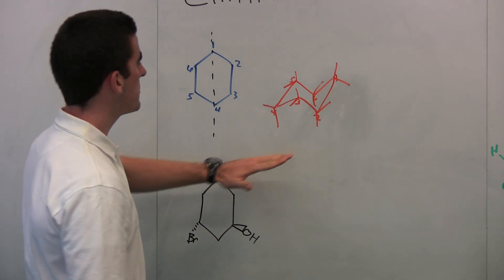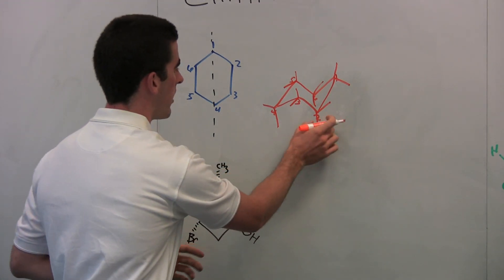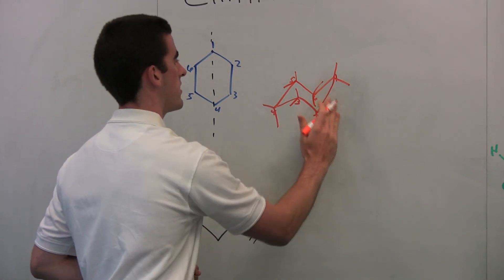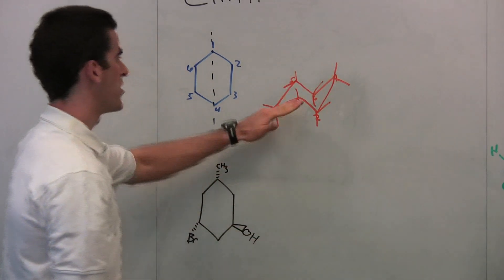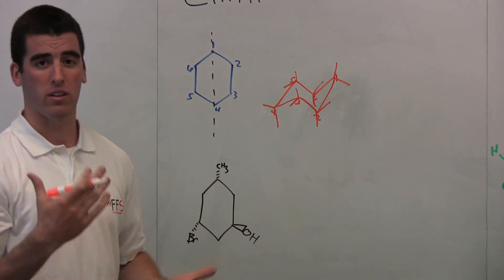So let's just recap here. The even numbers here, they all have down positions, down axials. The odd numbers, they all have up axials. And then you just fill in equatorials to make it all look like a tetrahedral.